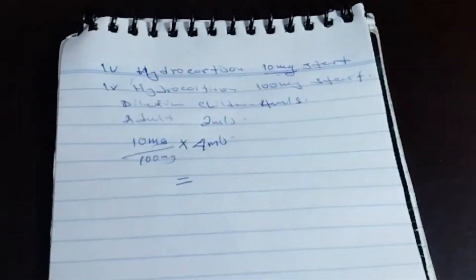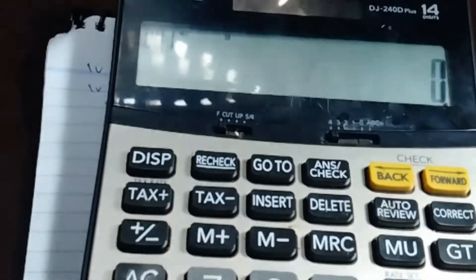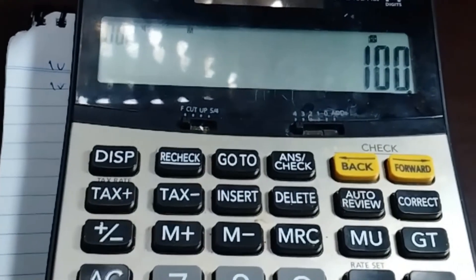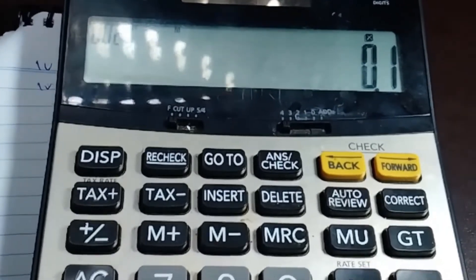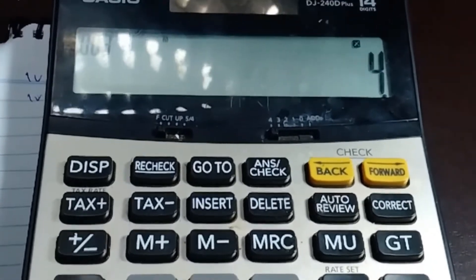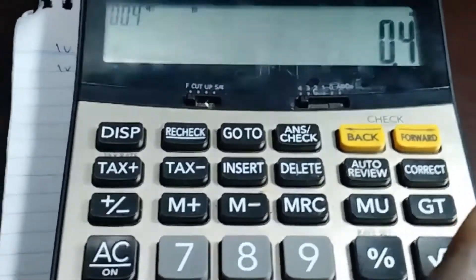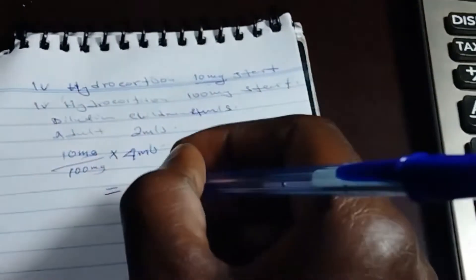So this one, let's calculate. 10 divided by 100 times four to get 0.4. That is what we are going to aspirate and give to this child.